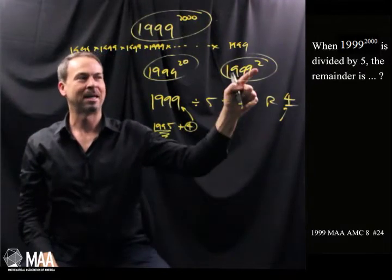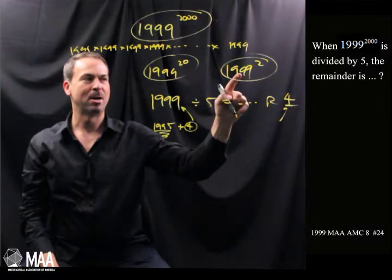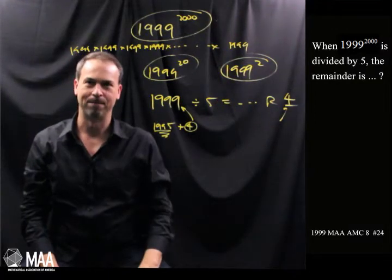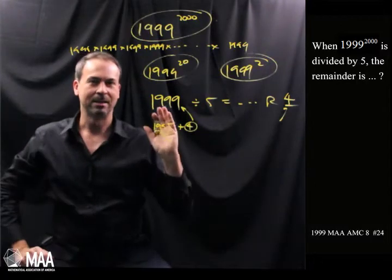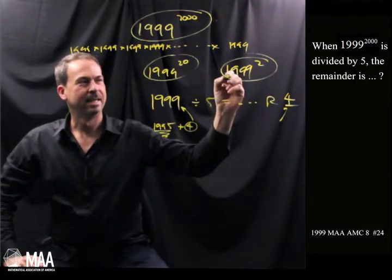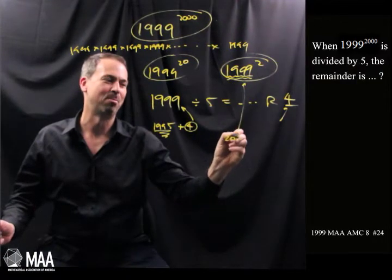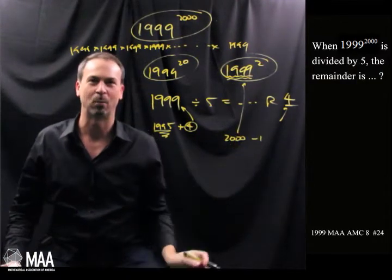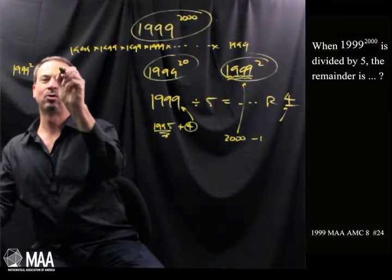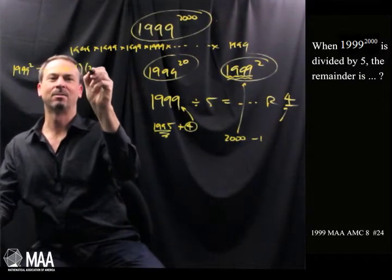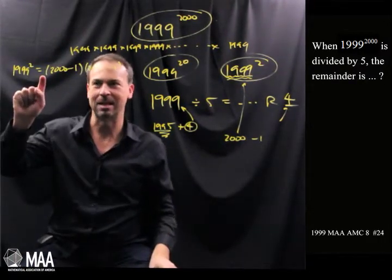So let's go back to say to 1999 squared. Hmm. Remainder of 4 times something of the remainder of 4. How can I think my way through that? Actually, there's a whole focus on 5. 1999, I can't help but realize it's actually a nice multiple of 5. It's 2000 take away 1. So instead of doing 1999 squared, what if I did 2000 take away 1 times 2000 take away 1? I feel like I can actually take that in.